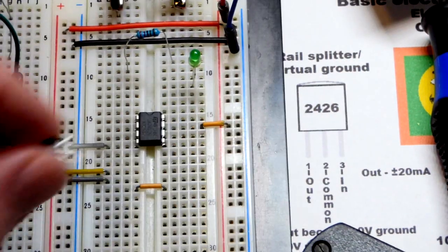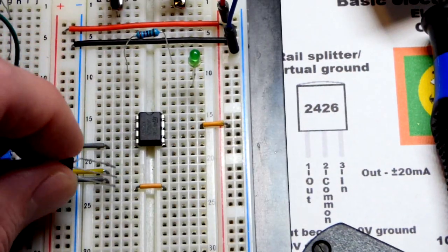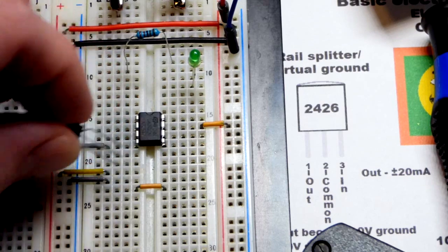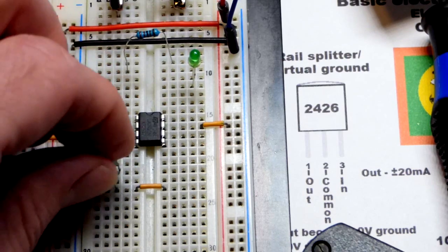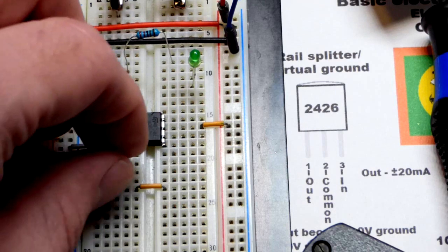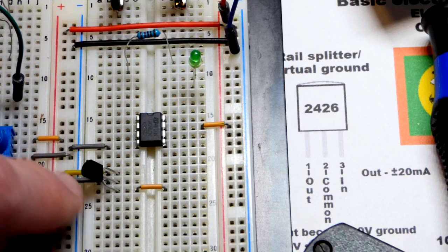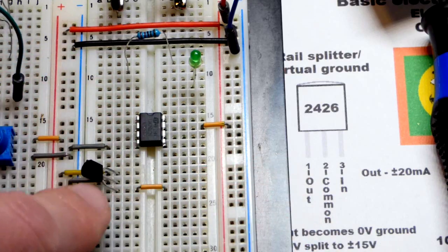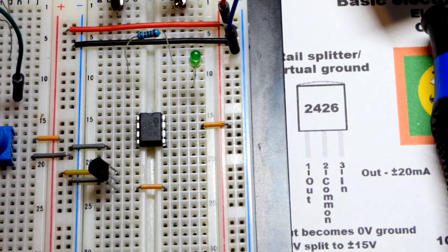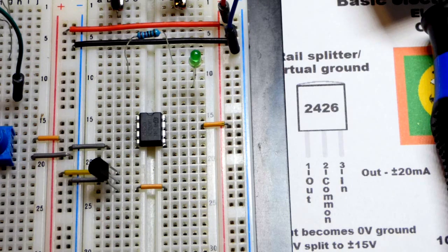So I usually work my way more positive up, more negative down. So I'm going to put pin three to the top there. And that's going to go to the positive rail. The power supply is off right now. And the middle pin, the common, is to the negative rail. And now we have our virtual ground right there.